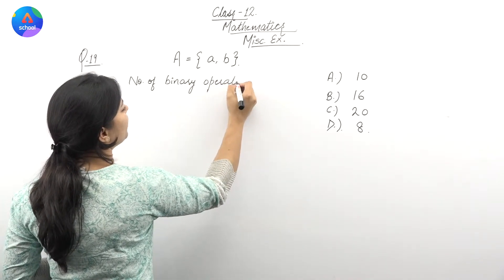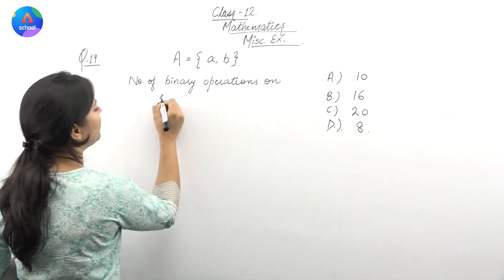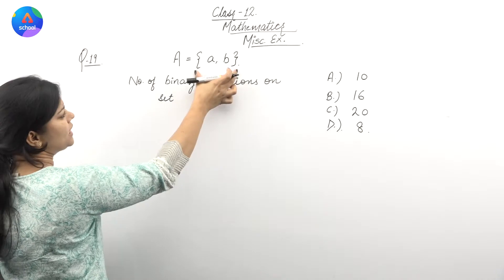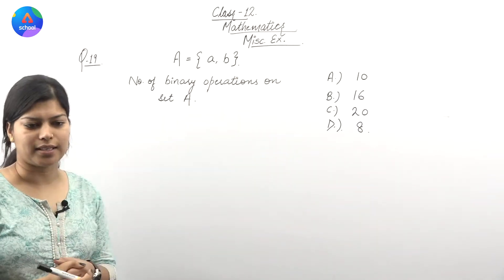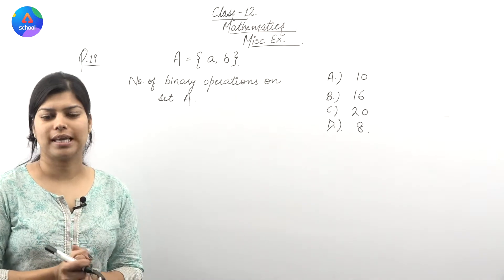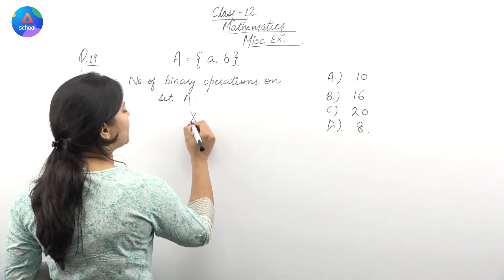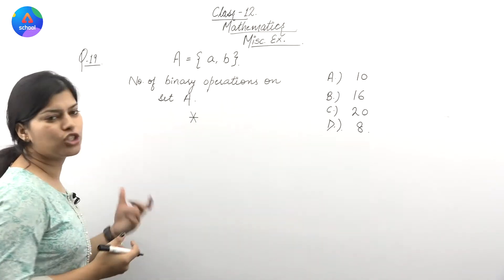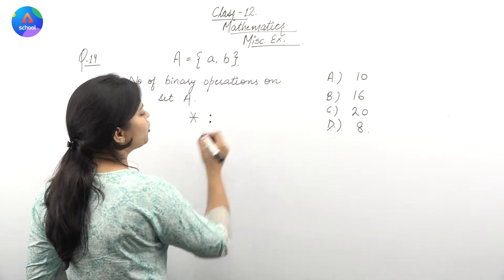We need to find out the number of binary operations on set A. Let's first see what a binary operation is. Suppose star is a binary operation.